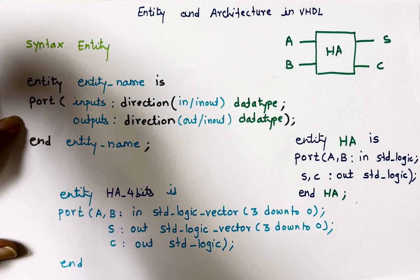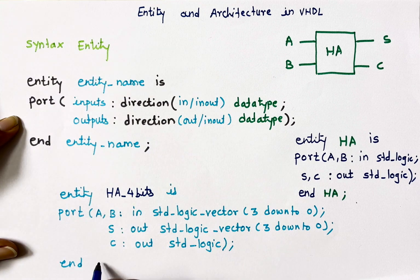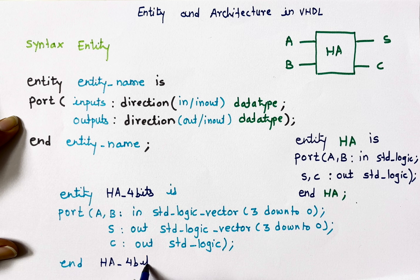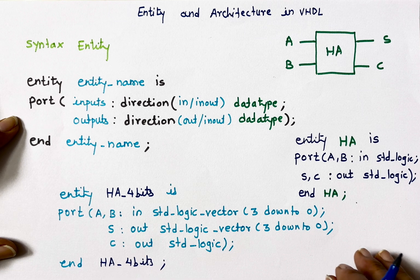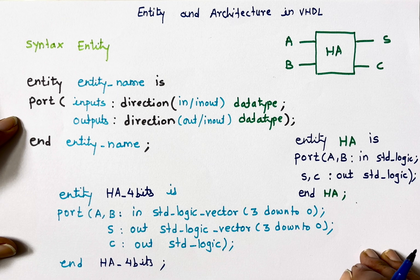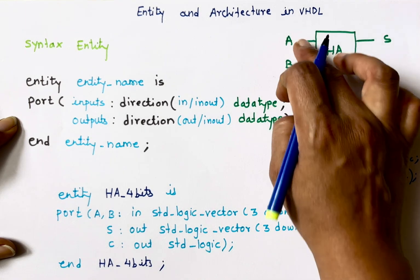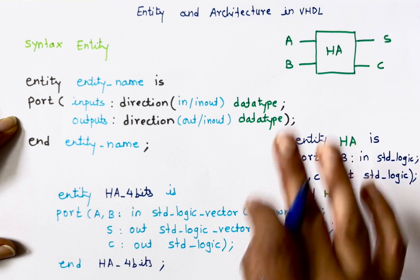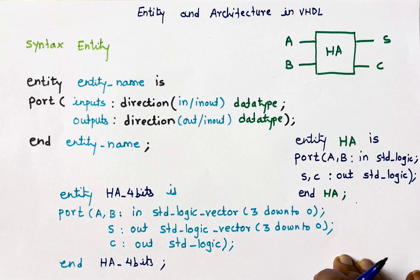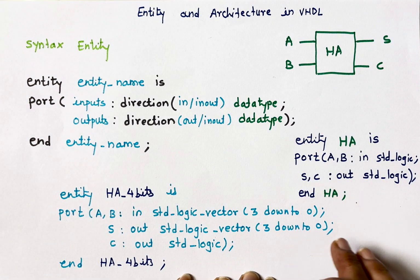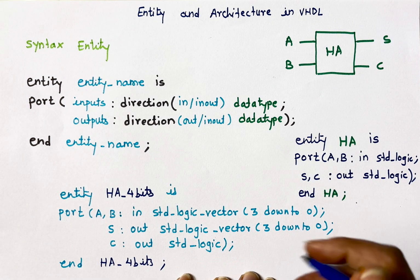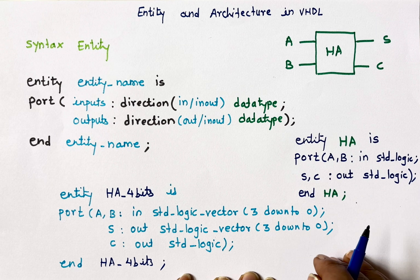Now we are done with all inputs and outputs — I'll close this bracket, add a semicolon, and 'end' the entity's name. Entity tells us how many inputs and outputs there are; it doesn't tell us how the internal circuit works. Architecture tells us that.